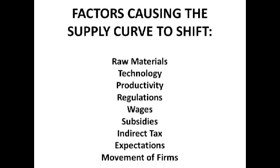Productivity works similarly. This point refers to labour productivity — that's output per worker per period of time. If workers become more productive, you get more output, costs fall, so supply increases because more firms can afford to produce. Right shift of the supply curve.